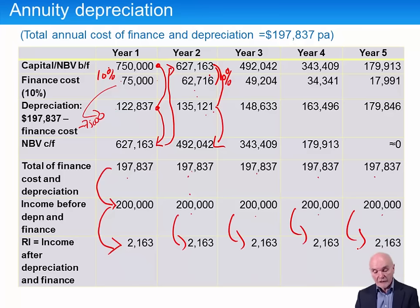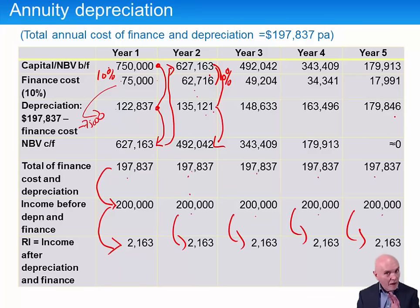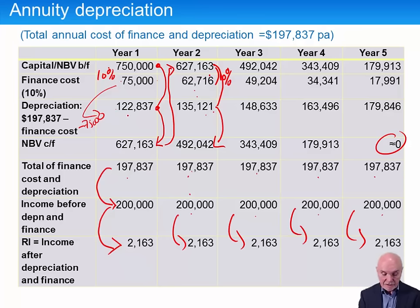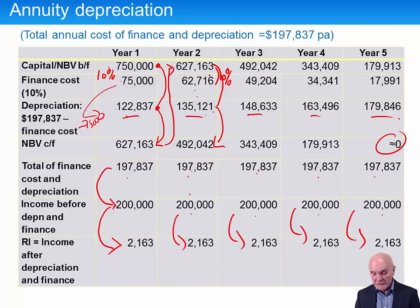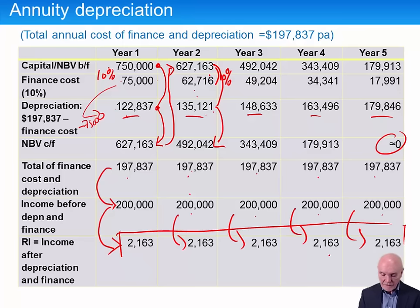You can work through the full five years and it works out perfectly. By the final year, the balance of $197,837 becomes the depreciation, and the asset is completely depreciated to zero — though the depreciation charge starts quite small in year one and gets bigger each year, which is counterintuitive. Ordinary reducing-balance depreciation starts high and falls, like a new car losing value rapidly at first. Annuity depreciation is a bit of a fiddle, arranged so as to give a constant residual income figure throughout the asset's life.